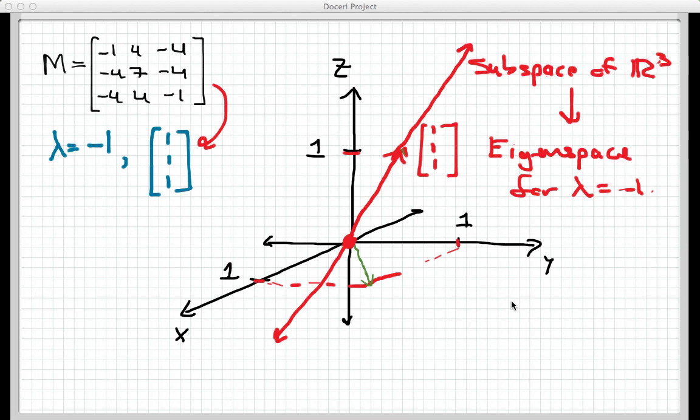that space was spanned by one vector, [1, 1, 1]. So that space is a line through the origin. But that space taken as a whole is called the eigenspace.